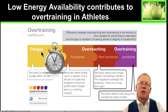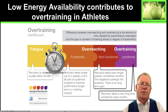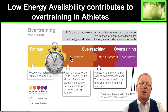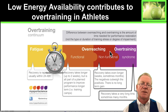When you have low energy availability — dropping below 45 kilocalories per kilogram of fat-free mass — you start to see fatigue, then overreaching after about two weeks. Recovery starts to take longer, athletes lose the ability to train at their potential, and ultimately this falls into overtraining syndrome, which may take months or years to recover from because it impacts hormone production.